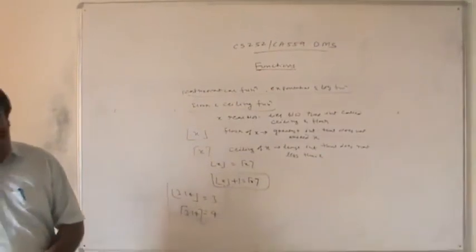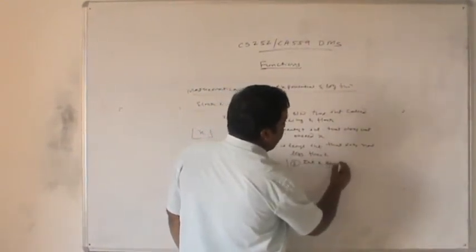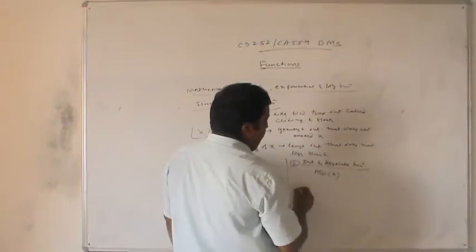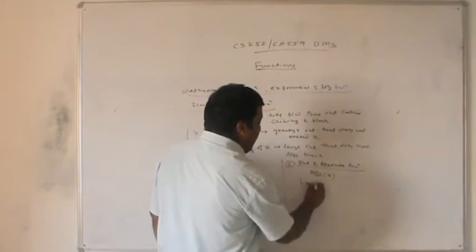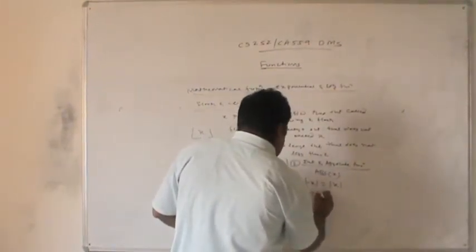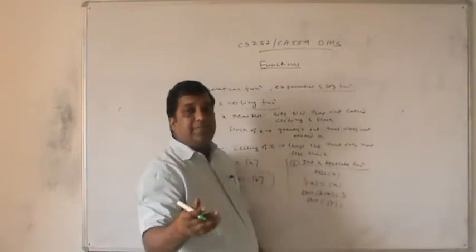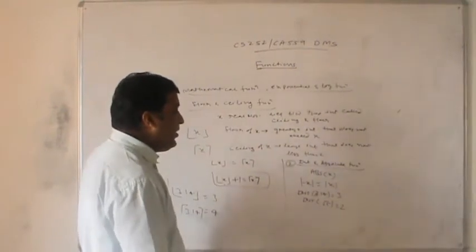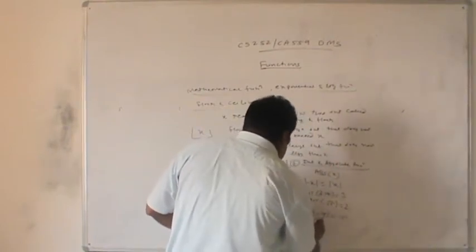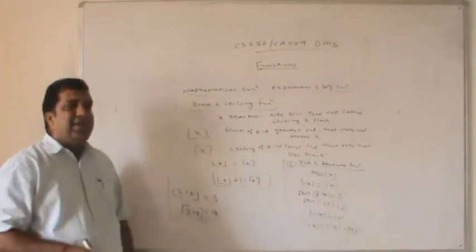The next is the integer and absolute function, represented as |x|. The property is that |−x| = |x|. For example, the integer value of −3.14 is 3, and the integer value of √5 is 2, since √5 generates a value of 2-point-something. For absolute value, |−15| = 15 — mod(x) = mod(−x) always generates mod(x).